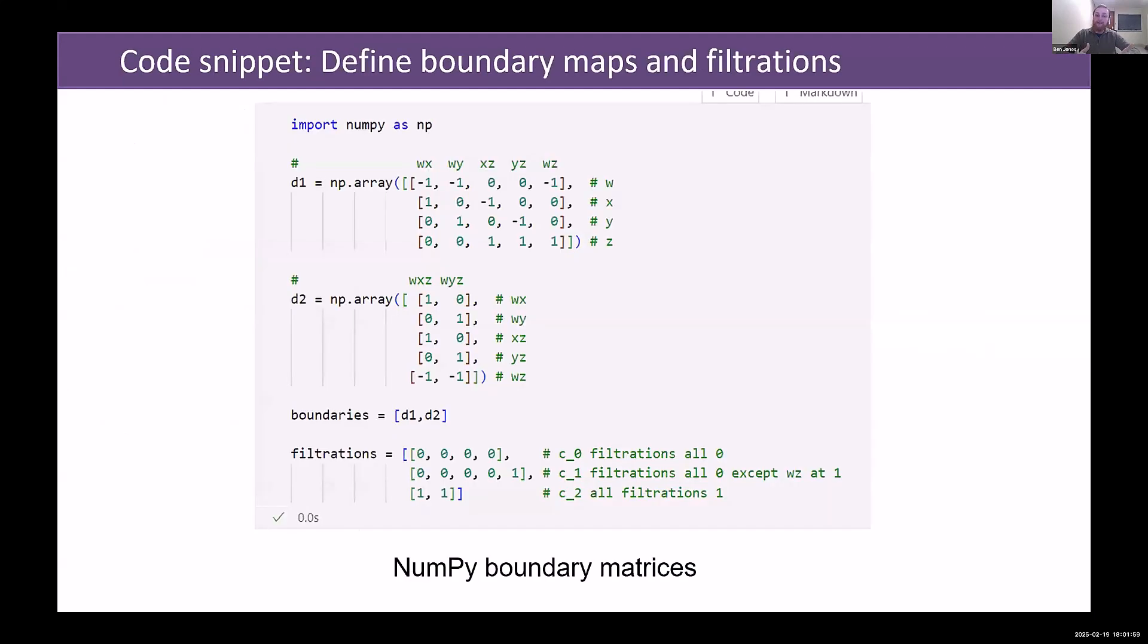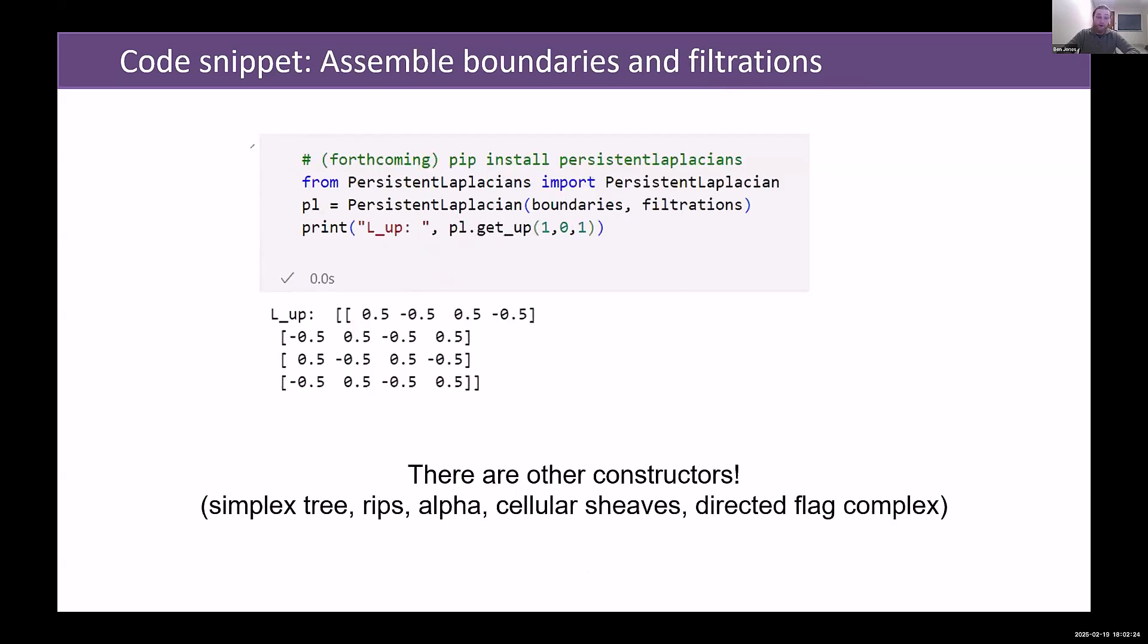Let's look at it with code snippets in this case. These are the same boundary matrices that we had with the combinatorial Laplacian, but we've added filtration values. So everything is at filtration level zero, except for the two-simplices and the last edge that gets added, and those get added at filtration level one. You can do this with any NumPy boundary matrices that you want.